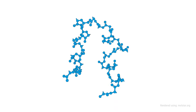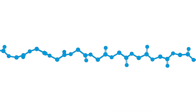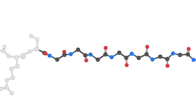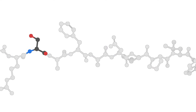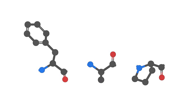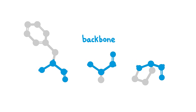If you took the backbone, unfolded it, and labeled the different atoms in it, you'd quickly identify a repeating pattern. That's because the chain is actually a sequence of special molecules called amino acids, all of which share a common set of atoms that make up the backbone.